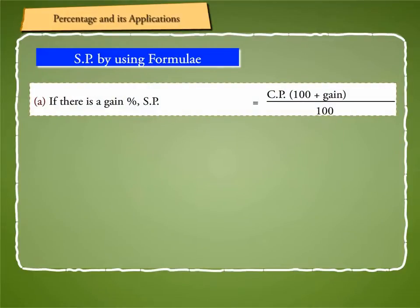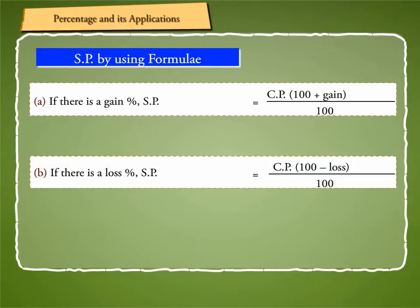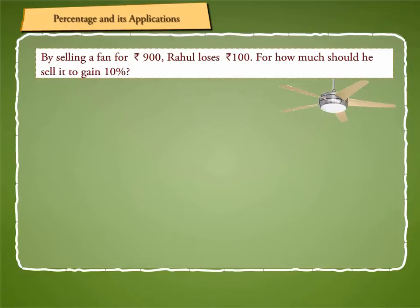You can find the selling price directly by using the following formulae. If there is a gain percent, SP is equal to CP into (100 plus gain) by 100. If there is a loss percent, SP is equal to CP into (100 minus loss) by 100. For example, by selling a fan for Rs. 900, Rahul loses Rs. 100. For how much should he sell it to gain 10%?